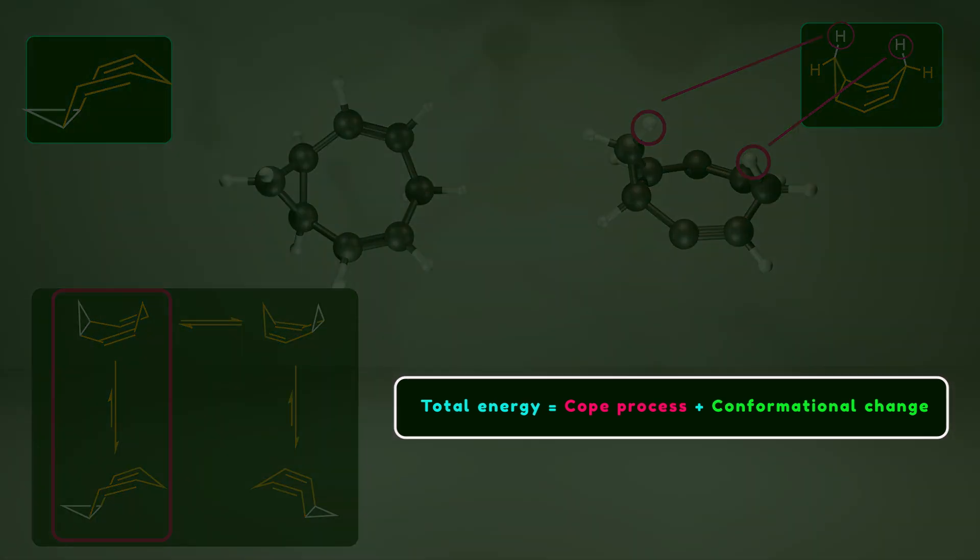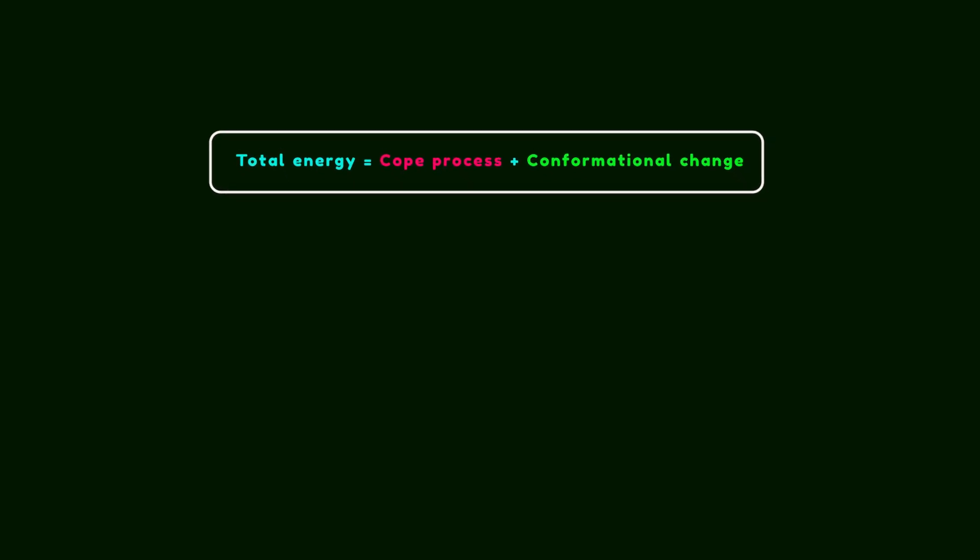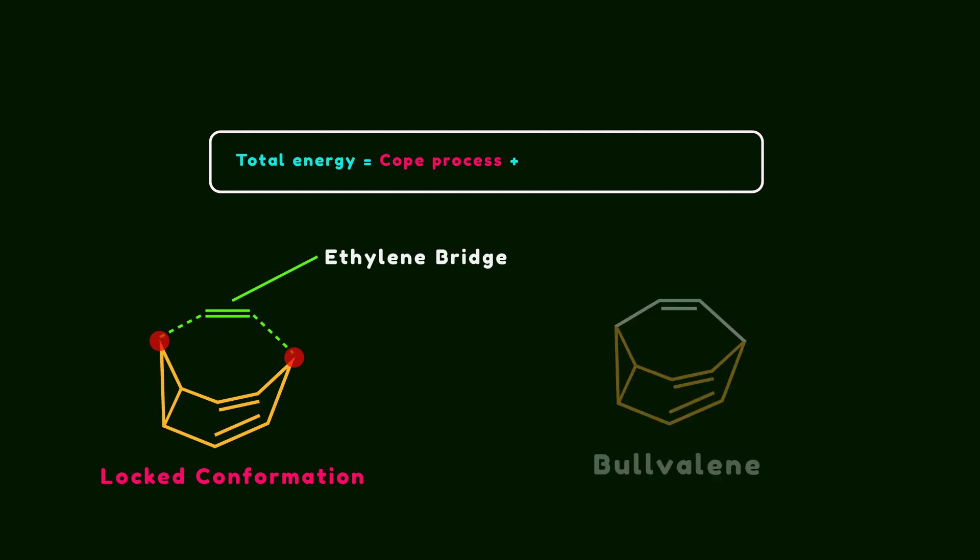Doering and Roth proposed that the Cope rearrangement could be even faster if the energy required for the conformational change were eliminated. They hypothesized this could happen if the molecule were locked into the boat-like conformation using a third ethylene bridge between the cyclopropene ring and the carbon at the opposite end of the molecule. This hypothetical molecule is known as Bullvalene.